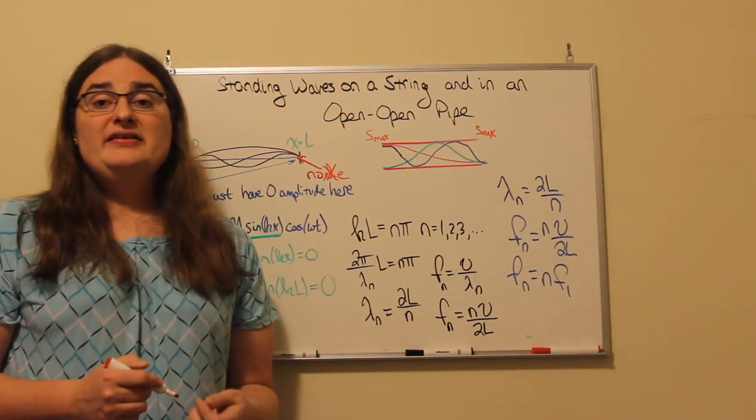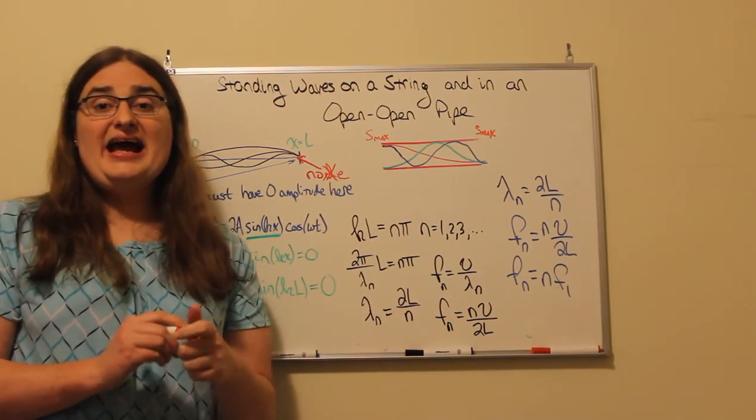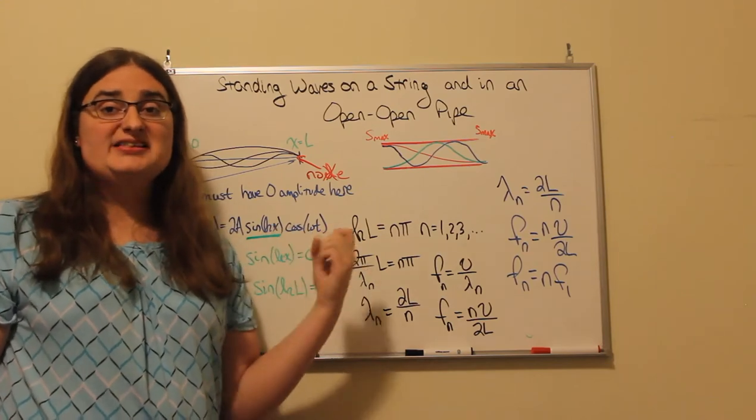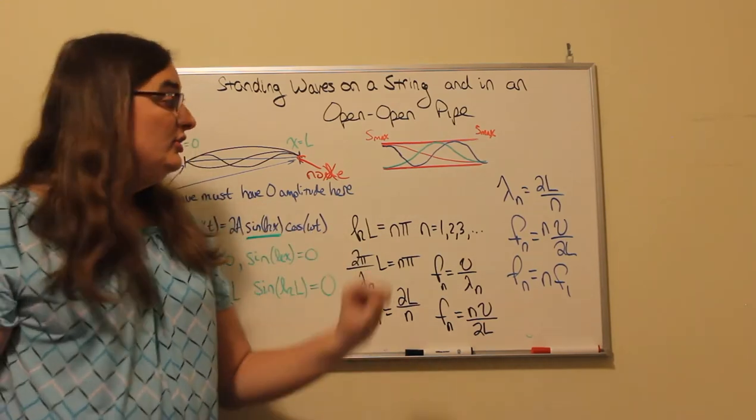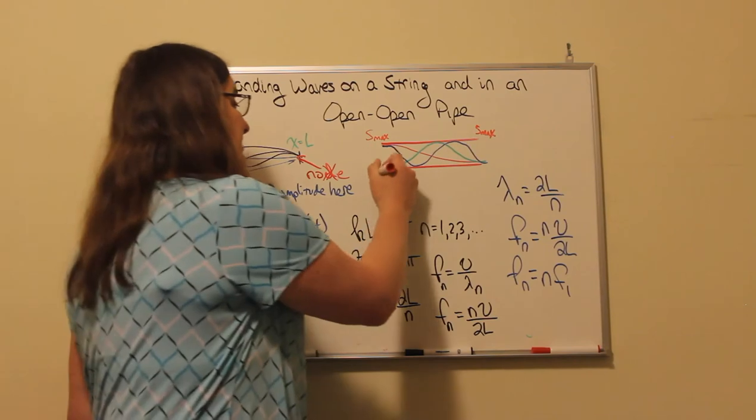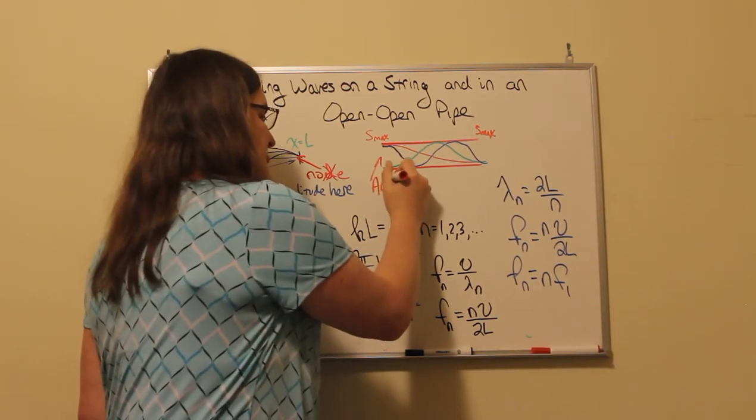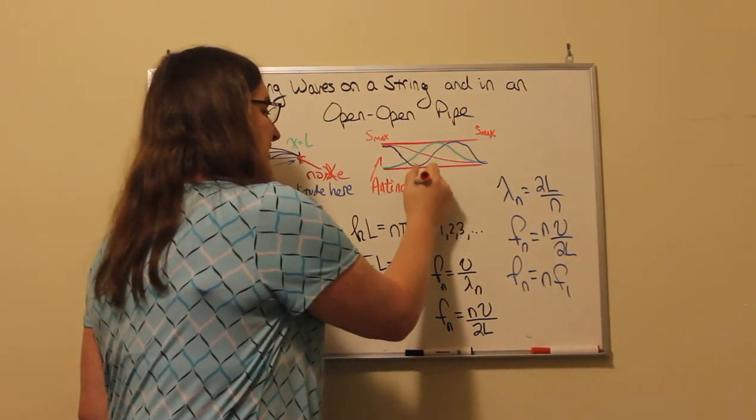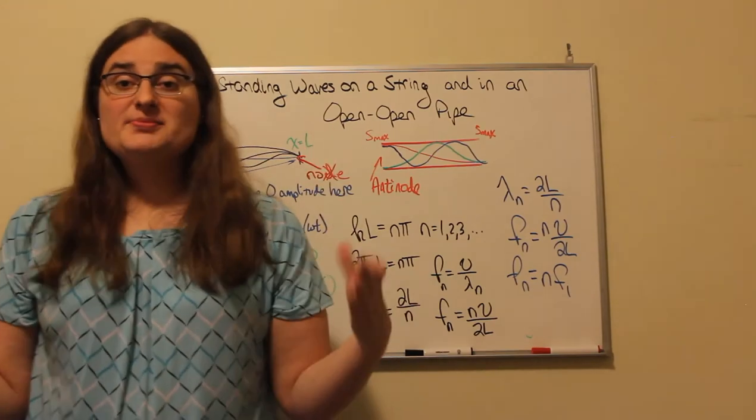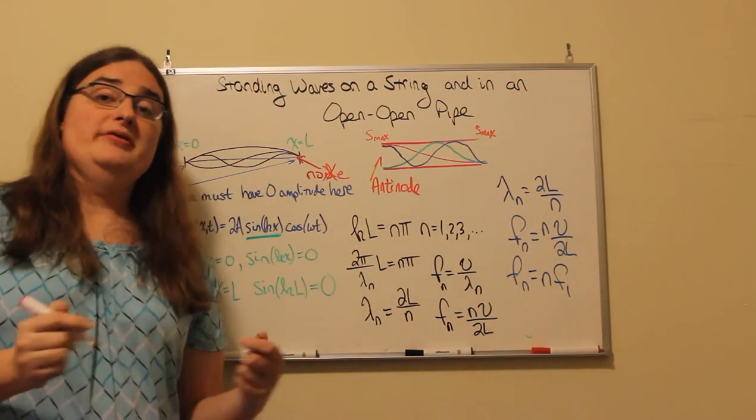On the other hand, at an open end of a pipe, the gas inside has to be able to displace the maximum amount. So we end up getting an anti-node, which is just the exact opposite of a node, maximum vibration rather than minimum vibration.